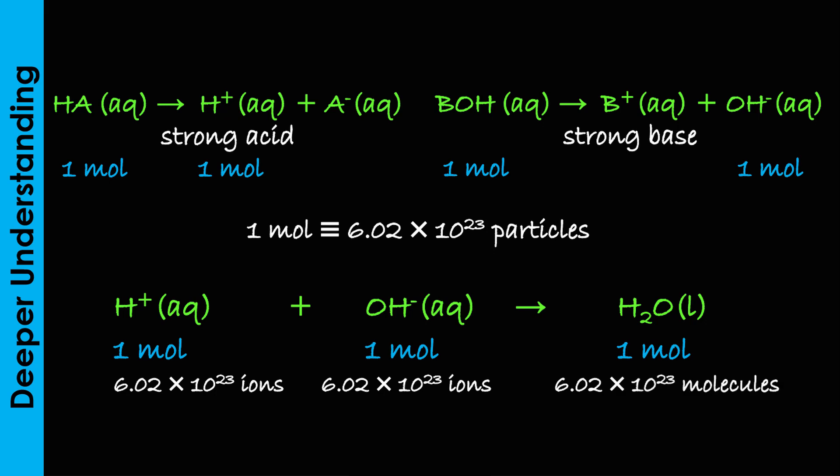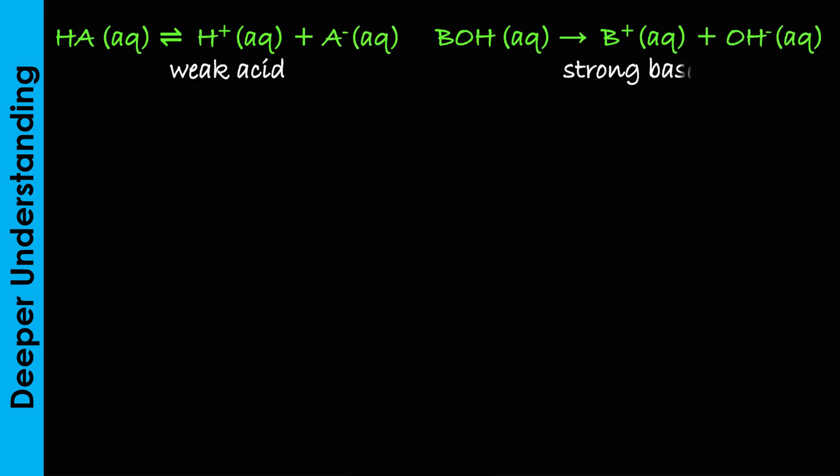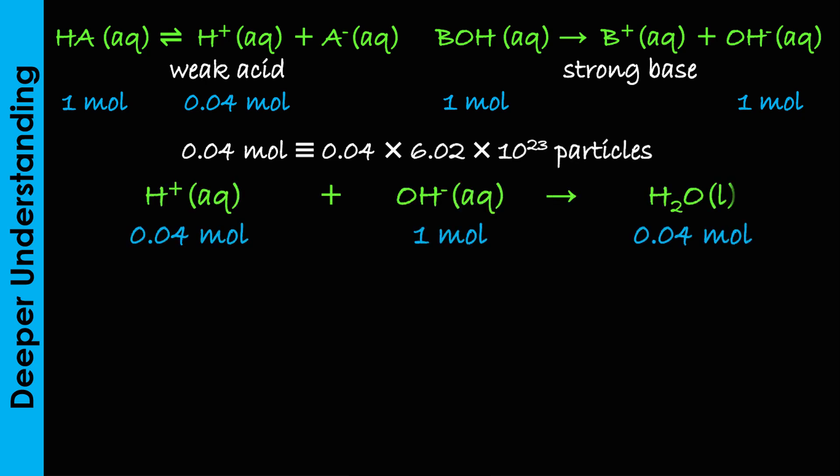However, when one mole of a weak monobasic acid like ethanoic acid with a degree of ionization of about 4% dissolves in water, it will produce only about that percentage of Avogadro's number of hydrogen ions. When it reacts with a strong base, even with the complete ionization of the base, they can only produce about 0.04 times Avogadro's number of water molecules because the weak acid would act as a limiting reagent. The same explanation suffices for a weak base.